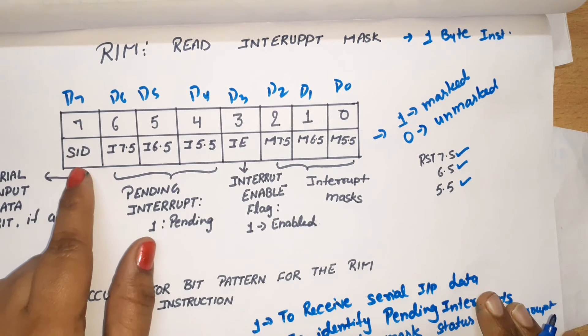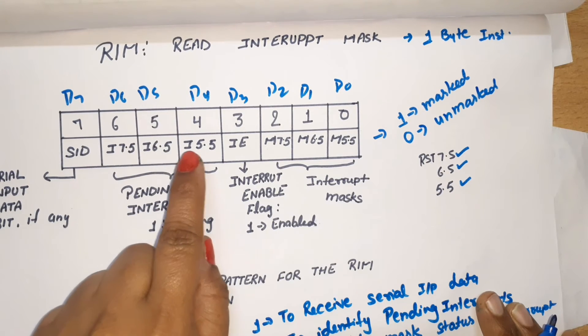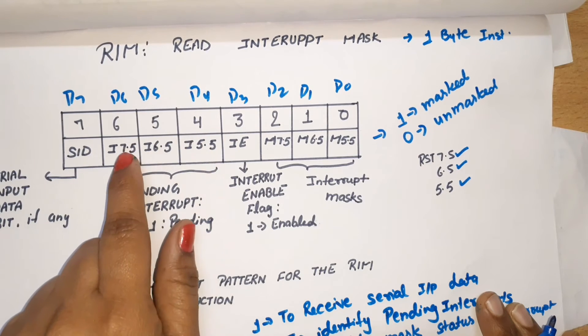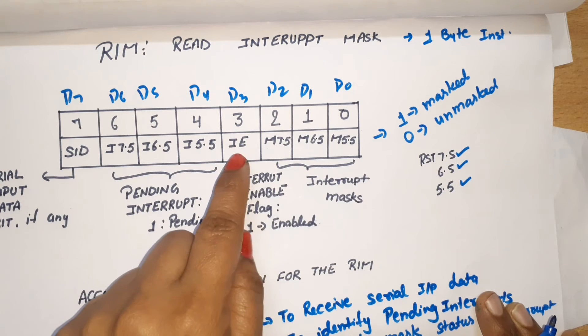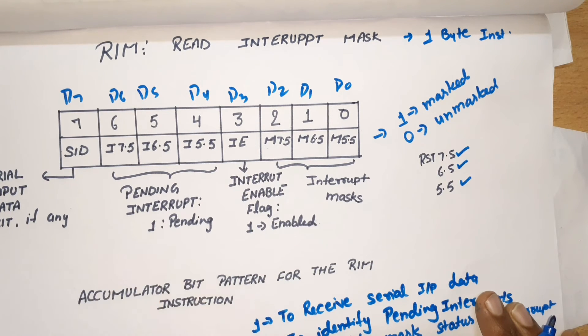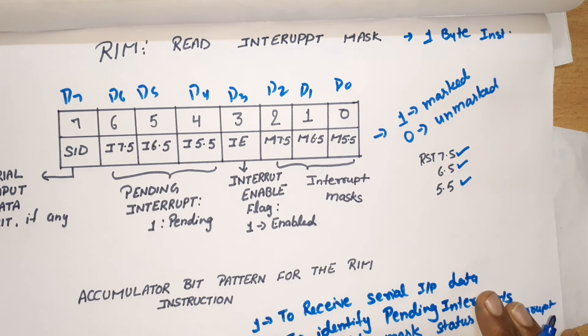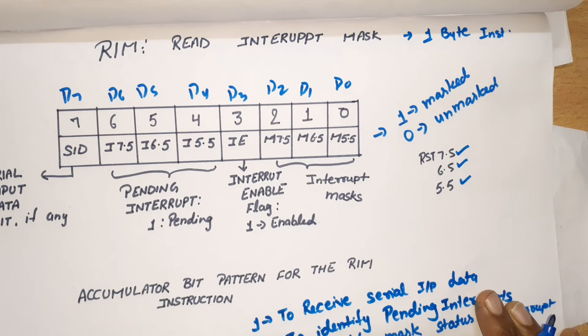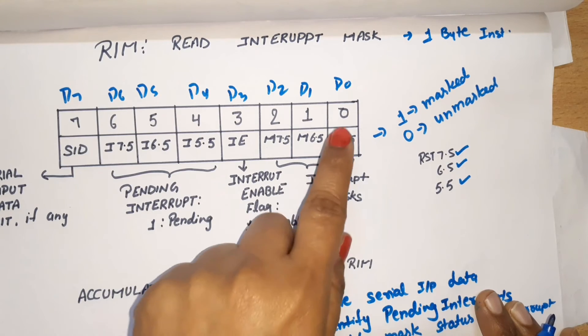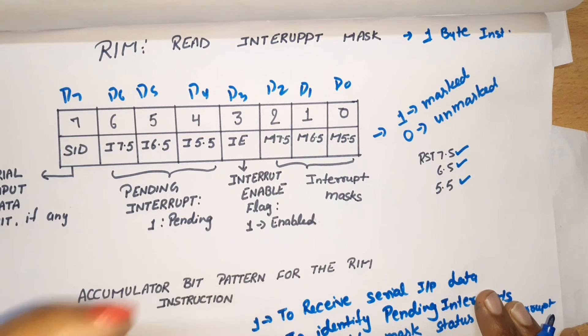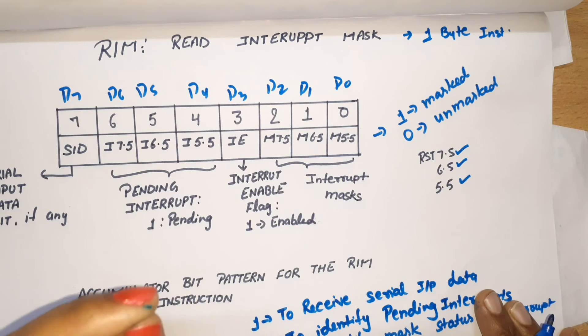To summarize: SID is for receiving serial input data. I7.5, 6.5, 5.5, that is D4 to D6, show the status of interrupts—whether interrupts are pending or not pending. IE is the interrupt enable flag. If this value is 1, interrupts are enabled; if this value is 0, interrupts are disabled. M7.5, 6.5, or 5.5, or you can say bits D0 to D2, show the status of masked interrupts. If any bit is 1, then that particular interrupt is masked. If the bit is 0, then the respective interrupt is unmasked.